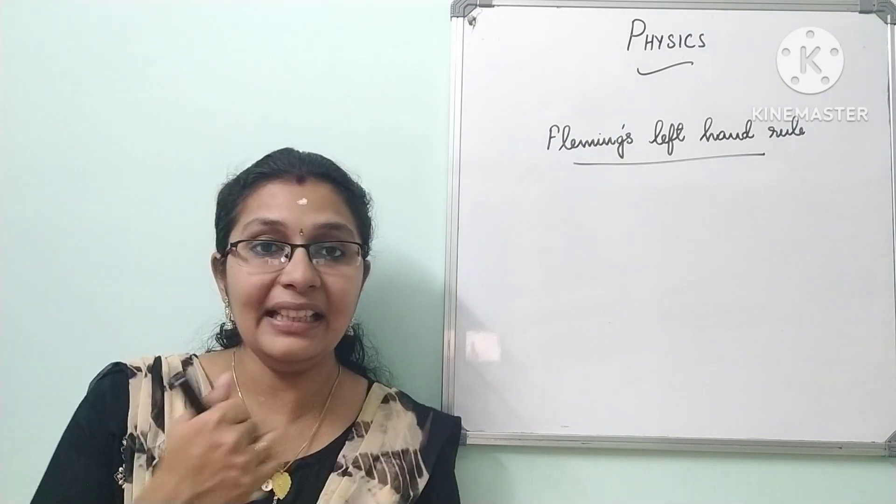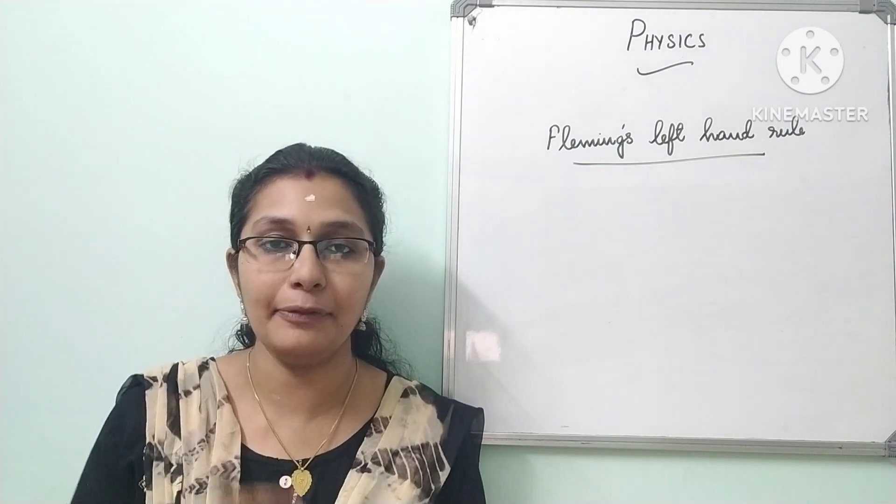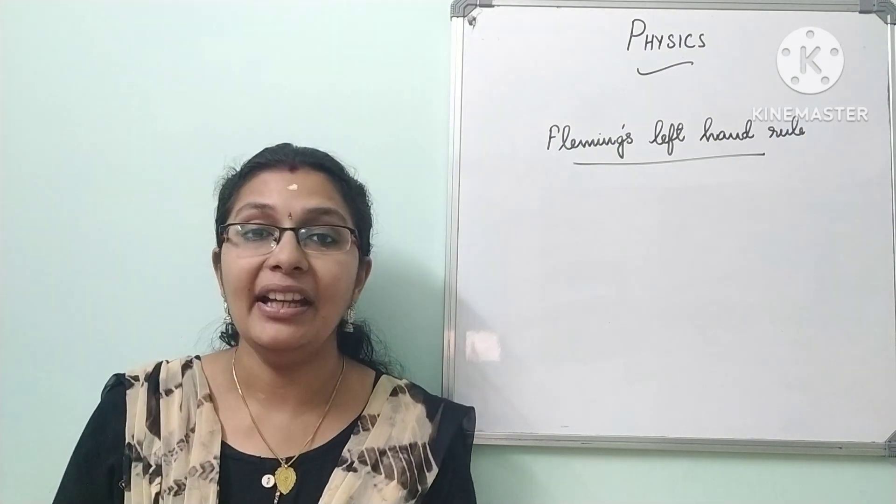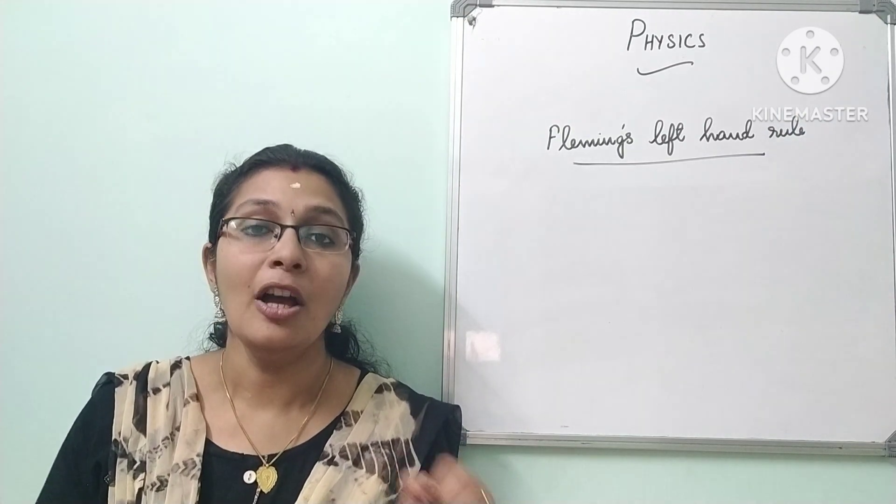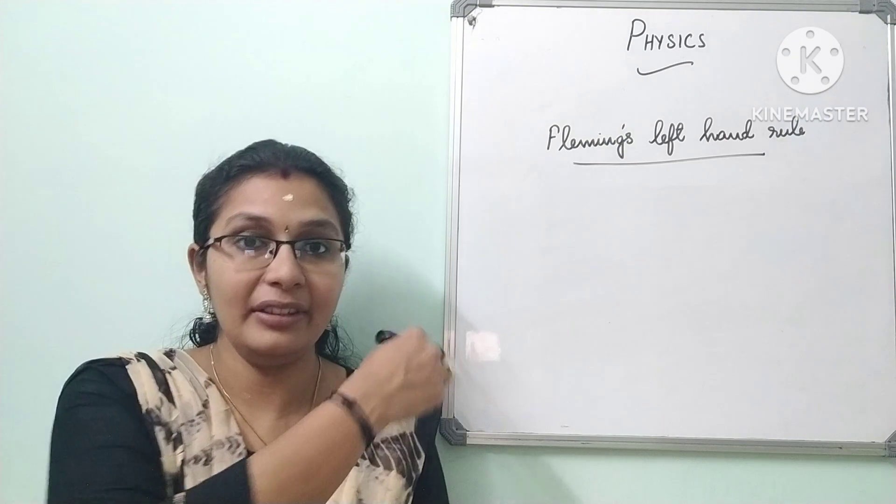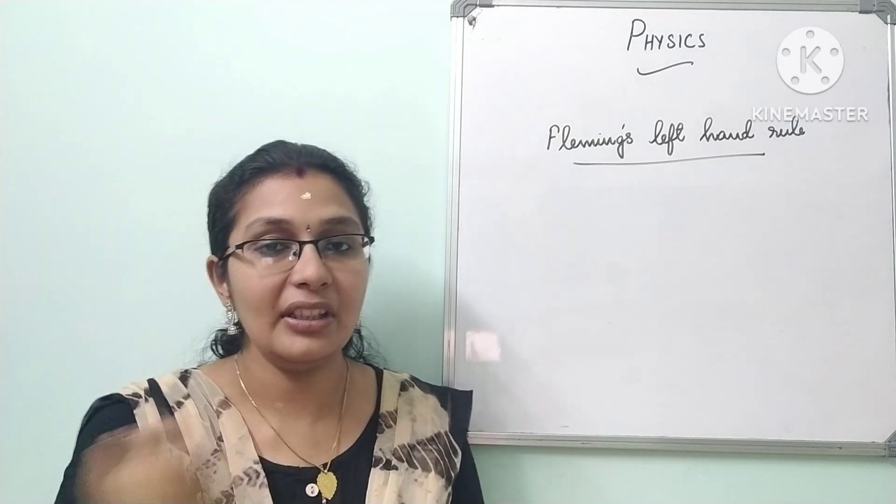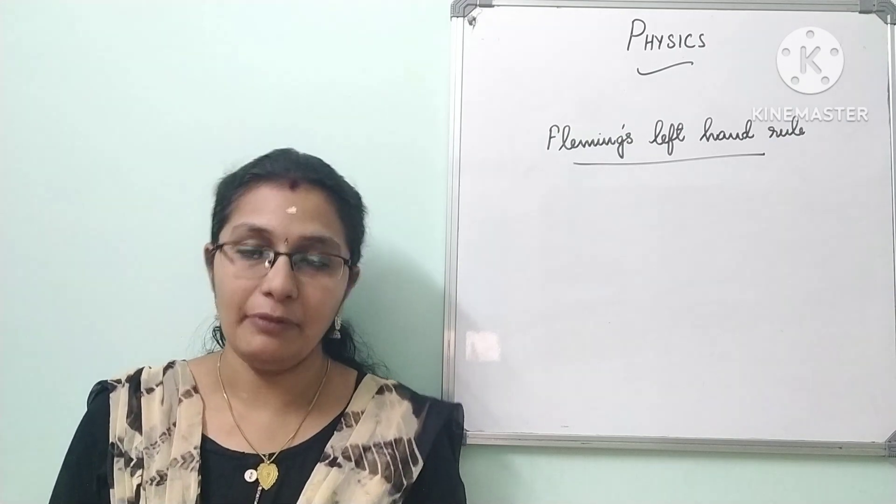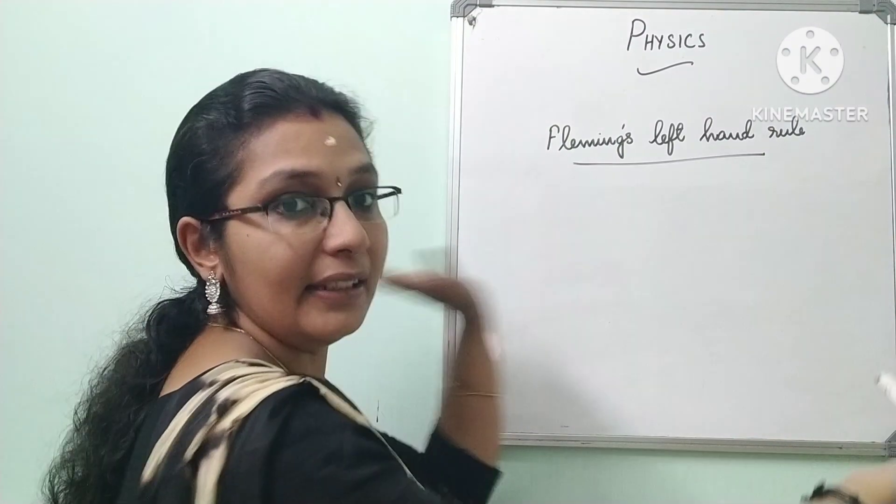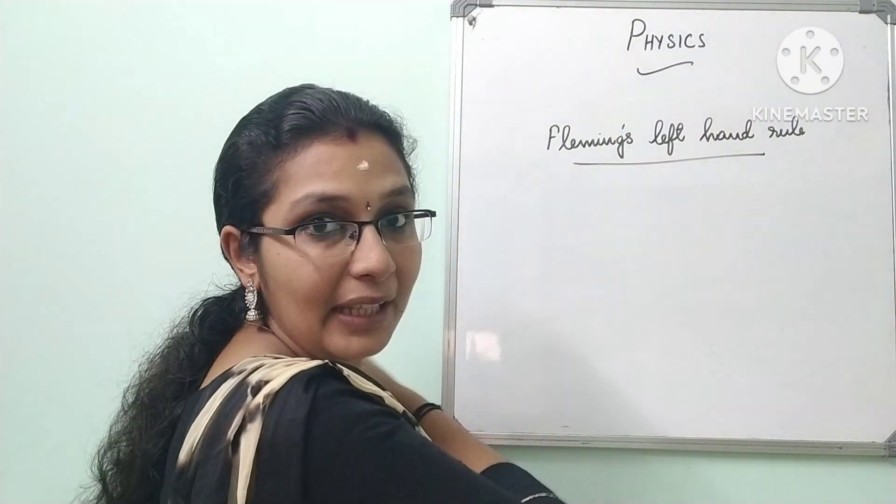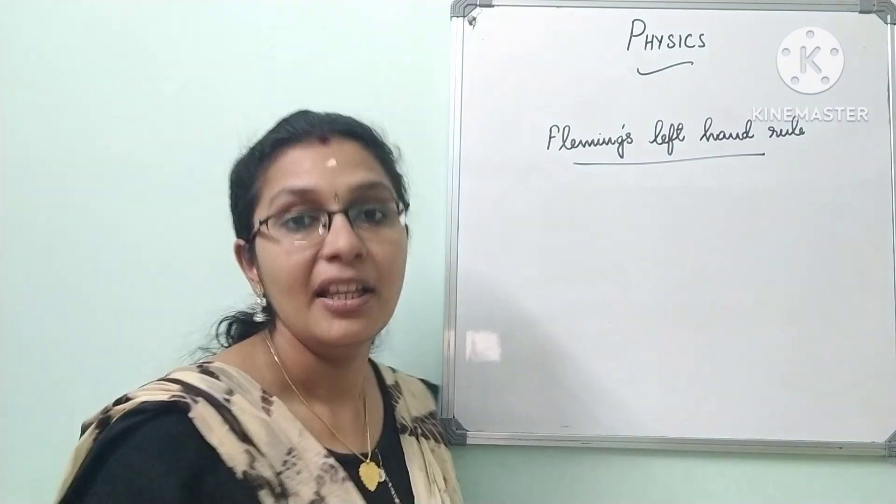When questions involve right, left, up, or down, it's straightforward. But whenever north, south, east, and west are mentioned, always remember: north is in front of you, south is behind you, right side is east, and left side is west. From your point of view, this is east, this left side is west, in front is north, and behind me is south.